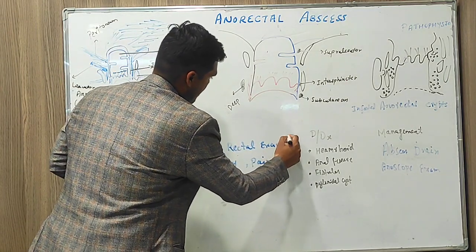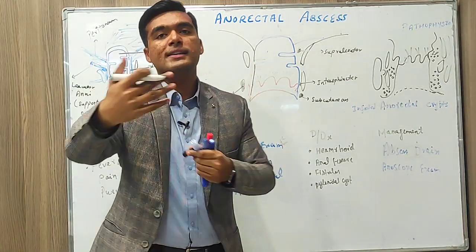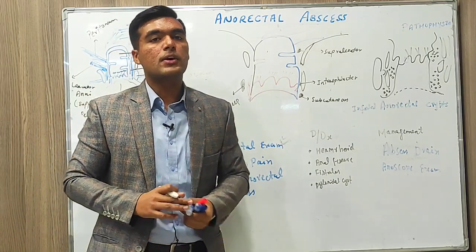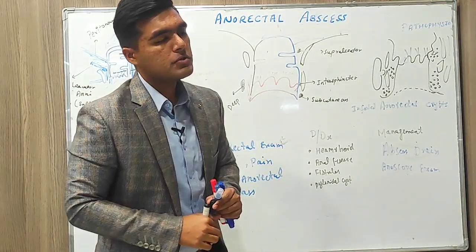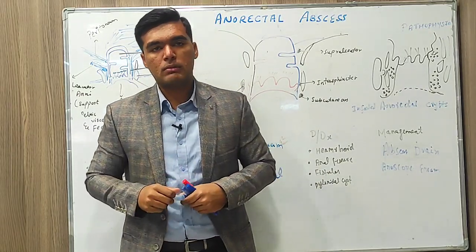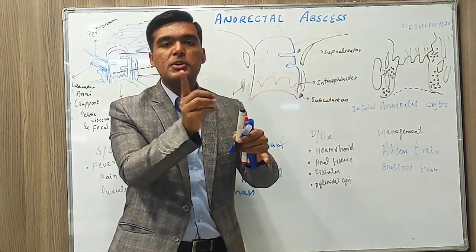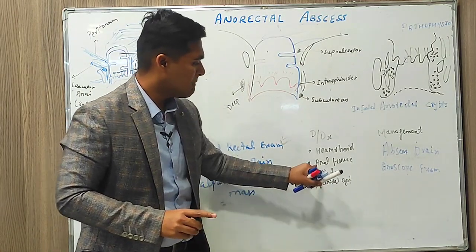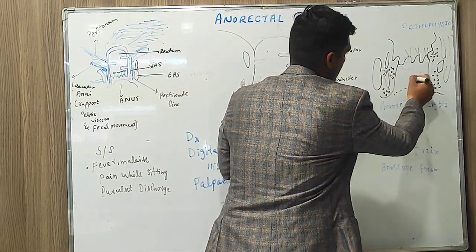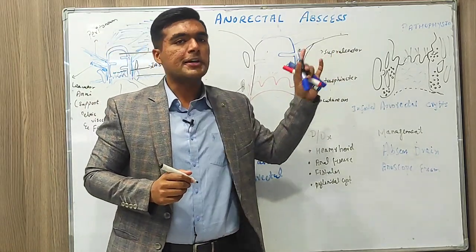Diagnosis is done by digital rectal exam, patient history, and palpable anorectal mass. By history and visual examination, 60-70% of diagnosis is done. Any remaining gaps are covered by digital anorectal exam. Differential diagnoses include hemorrhoids, cysts, fistulas, and fissures — checking for these 4-5 points in that area helps confirm the diagnosis of anorectal abscess.